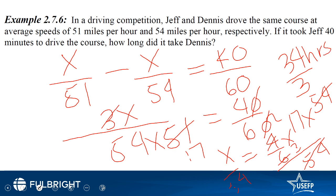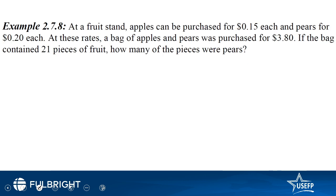Try to keep the use of calculator to the minimum. Next question: At the fruit stand apples can be purchased for 0.15 dollars and pears for 0.20 dollars. At these rates a bag of apples and pears was purchased for 3.8 dollars. If the bag contains 21 pieces of fruit, how many of these pieces were pears?